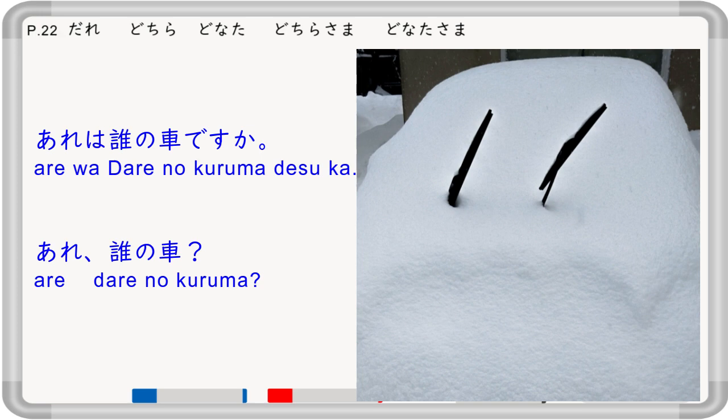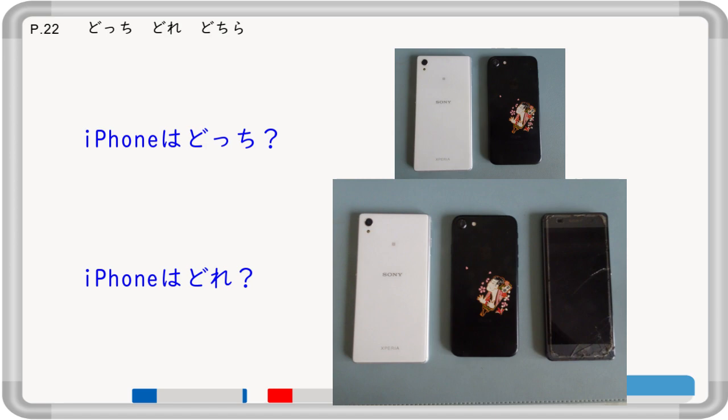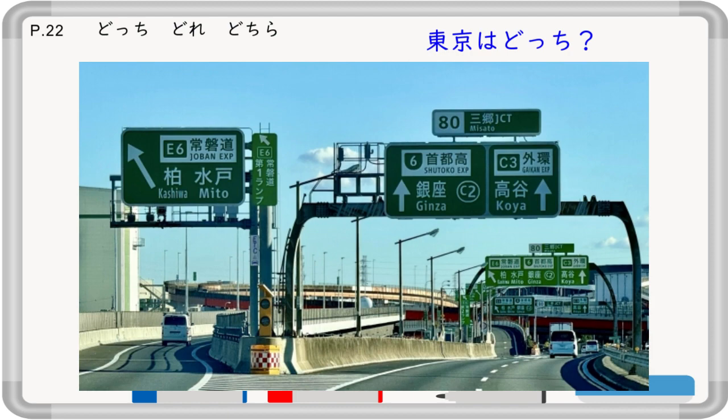'Are wa dare no kuruma desu ka?' — dare no means 'whose', so this means 'whose car is that?' Now, 'which' in Japanese is dochi and dore, with dochira as the polite form. 'iPhone wa dochi?' — dochi asks you to choose one out of two, so there are only two iPhones. 'iPhone wa dore?' — dore asks you to choose among more than two things. 'Tôkyô wa dochi?' — which way to Tokyo? 'Watashi no wa dore?' — which is mine?